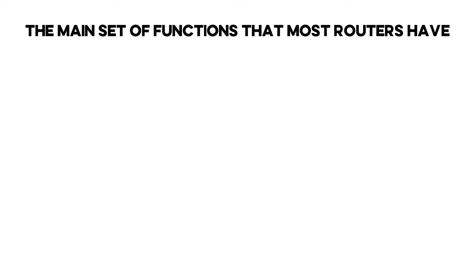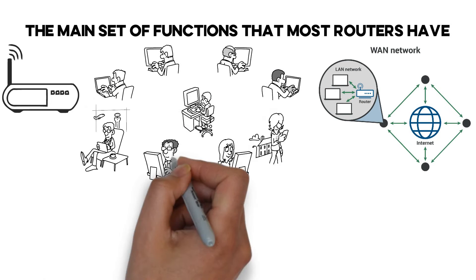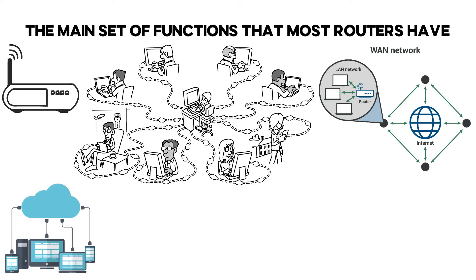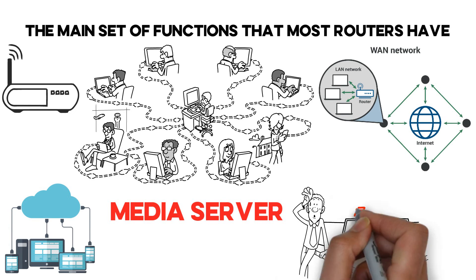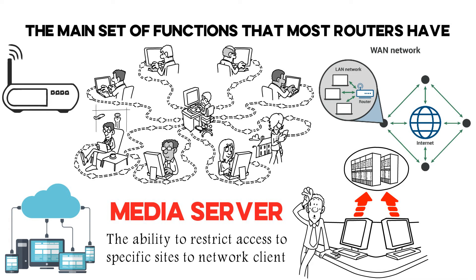The main set of functions that most routers have: deploying a wireless network so that connected clients can access the WAN; connecting many networks in a WAN; organization of cloud storage and media server; the ability to protect the network using a firewall; and the ability to restrict access to specific sites for network clients.